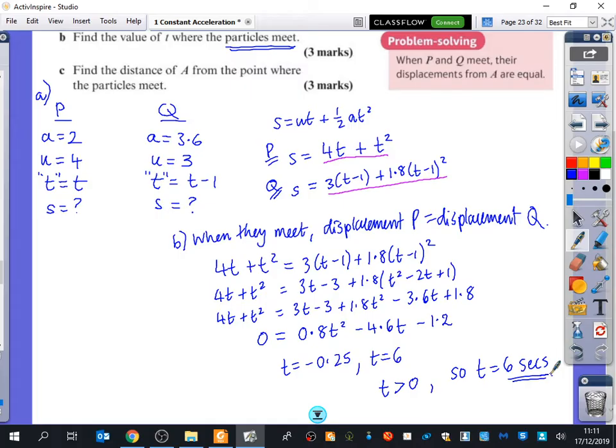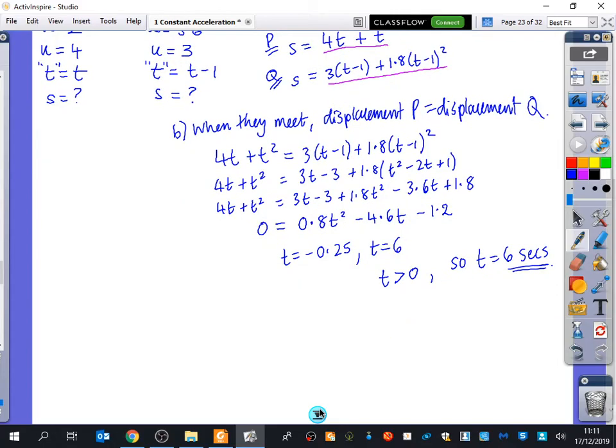So that was part B of the question. The hard bit was the beginning part of saying that Q was T minus 1. This time we had two unknown things. We had S and we had T. And then part C of the question says, find the distance of A from the point where the particles meet. Just substitute T into one of these equations that we've got here. And it will tell us what the displacement was when they met each other. So that now tells us for part C of the question. We know that T is equal to 6. So which one would you prefer to use, Arifel? I'd prefer to use that one as well. So we know that S is equal to 4T plus T squared. So that's 4 times 6 plus 6 squared, which is 60 metres.